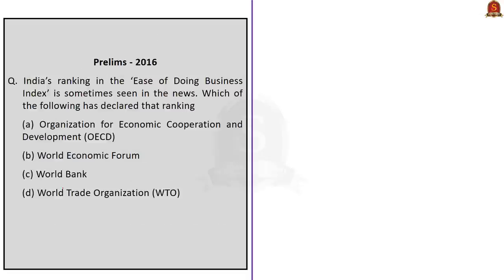Moving on to the next question: India's ranking in the Ease of Doing Business Index is sometimes seen in the news. Which of the following has declared that ranking? Options are OECD, World Economic Forum, World Bank, or WTO. The correct answer is option C — World Bank. We can easily eliminate options A and D. The confusion is mostly between option B and option C, since the World Economic Forum publishes various reports and indices.